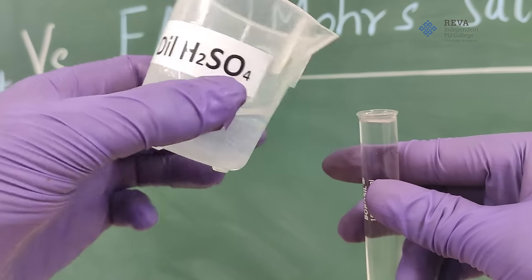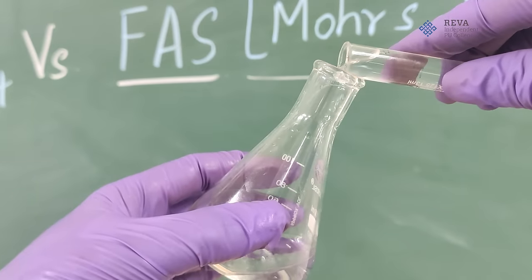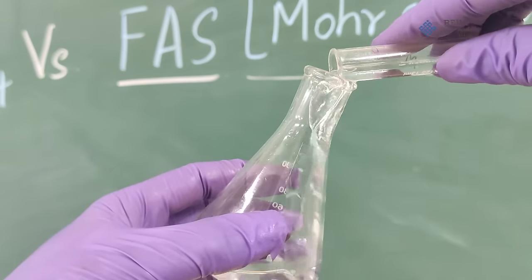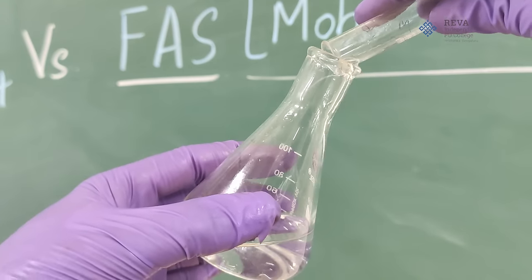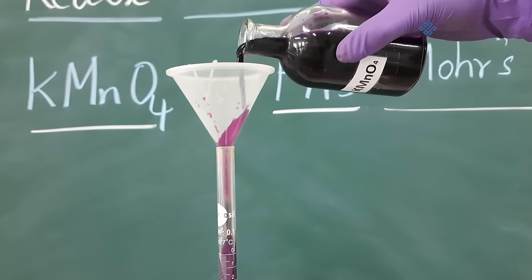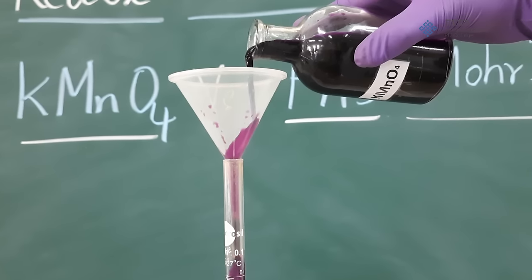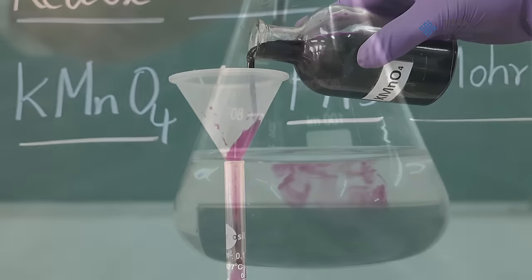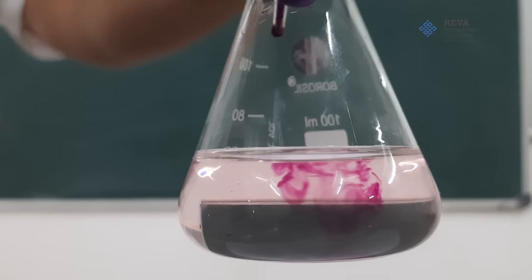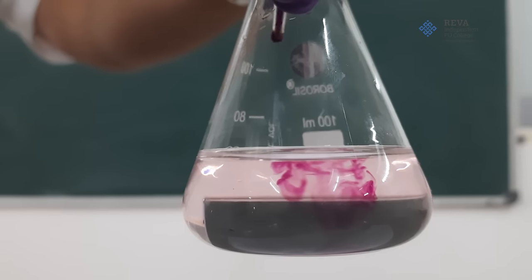Now to the conical flask, add one test tube of dilute sulfuric acid which acts as acid medium. In this experiment, we are not using any external indicator since the potassium permanganate solution itself is a self indicator as it is colored.